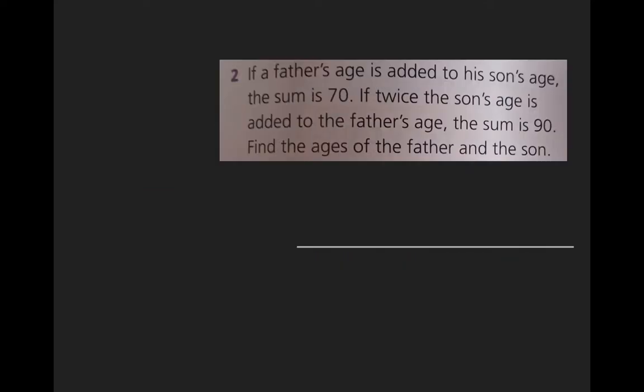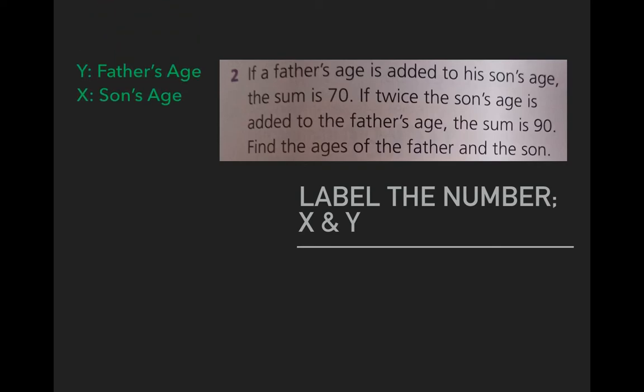Example number two. Okay, so what are our steps? Label the numbers x and y. When you read through the question, what we have here is a father's age and the son's age. So I'm going to call y the father's age and x the son's age.